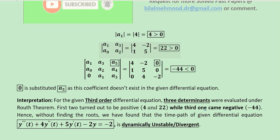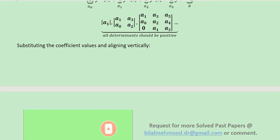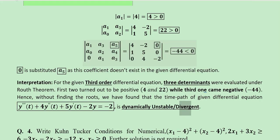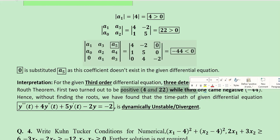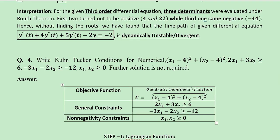However, once we solve the third determinant — which is 3×3 in order — we get minus 44, which violates the condition of convergence and shows a divergent case with dynamic instability. Note that a5 is highlighted with a box because there is no a5 in the given equation, and a4 is also kept at 0. Without finding the roots, we have found the dynamic stability of the time path of this differential equation.